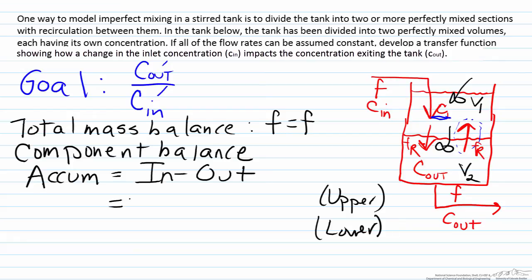For the upper portion, what is coming in? We have two inlet streams: the first is what's coming in from the general inlet, F times C_in, and the second is from this stream here, which is F_R multiplied by C_out. Exiting we have one stream going to the lower portion, F_R times C_1. Our accumulation term represents the amount of mass of this component we have, which can be represented by multiplying the volume of the upper portion V_1 by the concentration C_1.